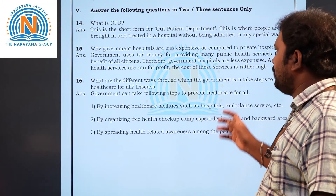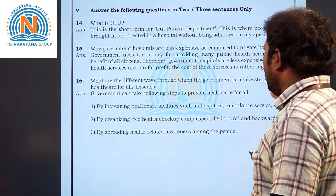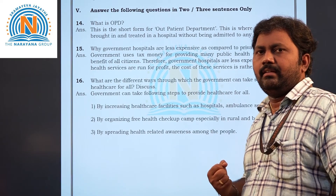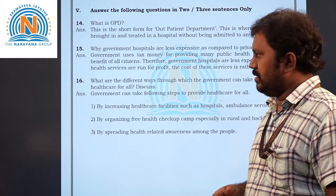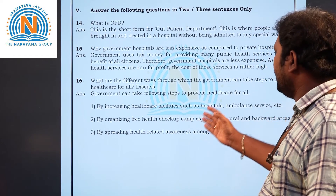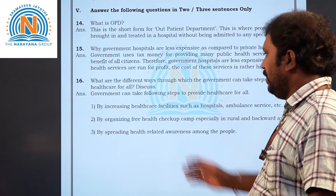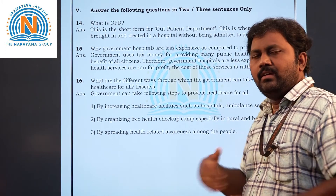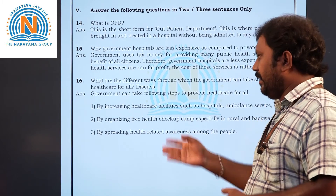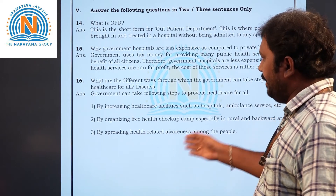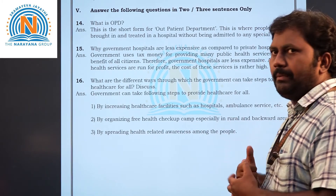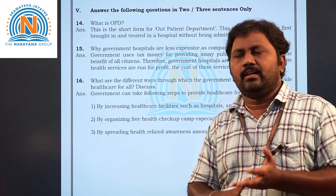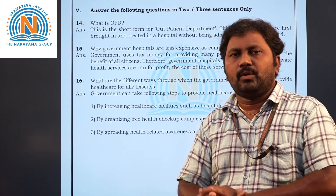Sixteenth question: what are the different ways through which the government can take steps to provide healthcare for all? First, by increasing healthcare facilities such as hospitals and ambulance services. Second, by organizing free health checkup camps especially in rural and backward areas. Third, by spreading health-related awareness among people — about clean drinking water, cleanliness of surroundings, and maintaining a healthy environment.